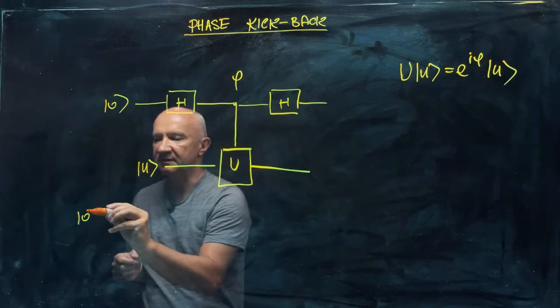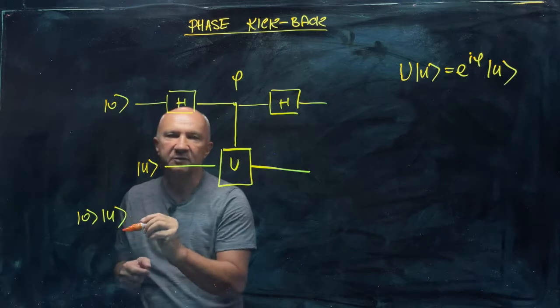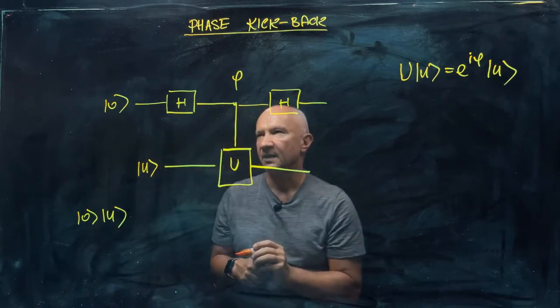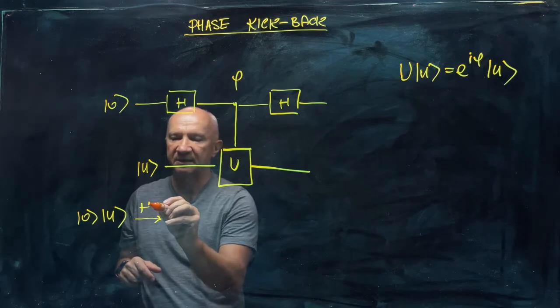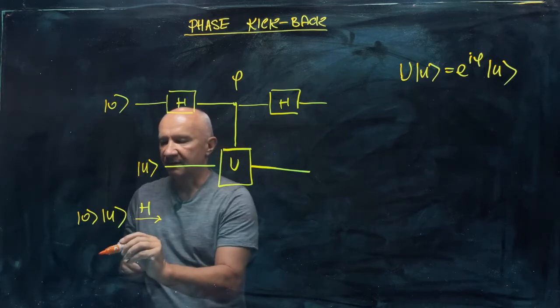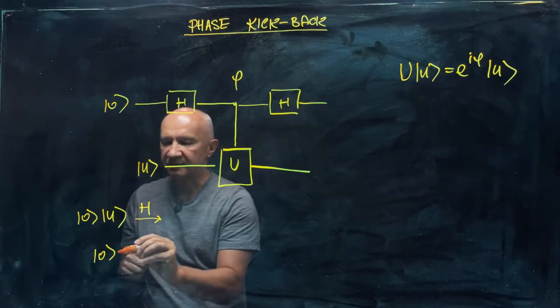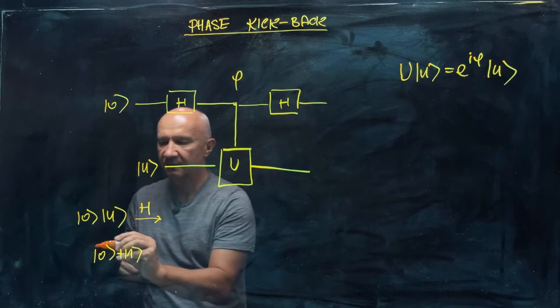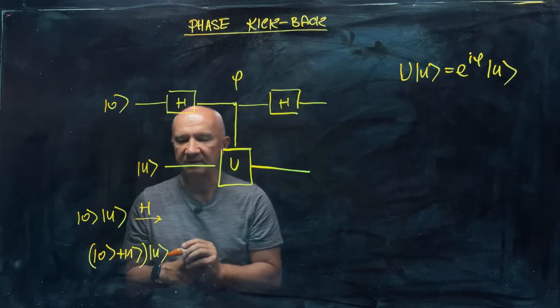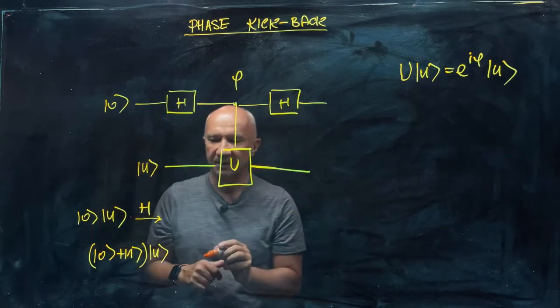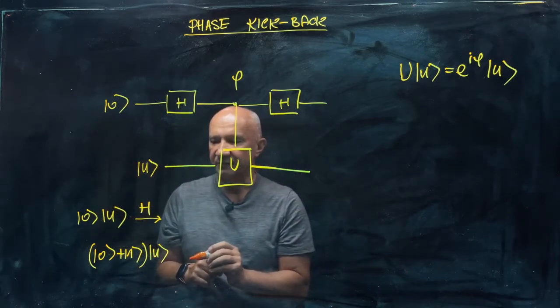So the first qubit is initially in state zero, the second qubit in state U. Then the first qubit goes through the Hadamard transform. That brings the first qubit to the superposition of zero plus one, and the second qubit is still in state U. I just dropped the normalization factor one over square root of two.